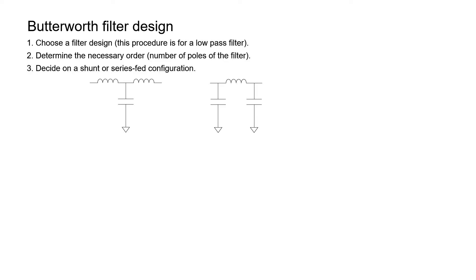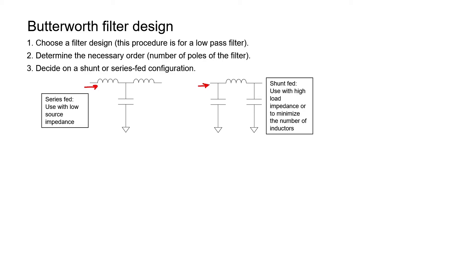The second step is to define the necessary order of the filter. Since we're first designing a low-pass filter, this is equivalent to stating how many poles the filter is going to have. Step three: decide whether you want a shunt or series-fed configuration. The circuit on the left represents a series-fed filter, because the first element is in series with the source. The circuit on the right represents a shunt-fed filter, because the first element after the source is in shunt — connected to ground. No matter which configuration you choose, the filter will do the same job with the same roll-off in decibels per decade. I recommend a series-fed filter for low source impedance, and a shunt-fed filter for high load impedance or to minimize the number of inductors.